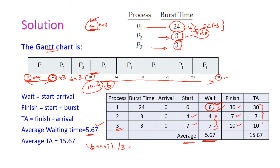Next, we compute the turnaround time. The finishing time of P2 is 7, P3 is 10, and P1 is 30. Since the arrival time is 0, the finish time equals the turnaround time. The average turnaround time is (30 + 7 + 10) divided by 3, which equals 15.67 milliseconds. This is how the round robin scheduling algorithm works.